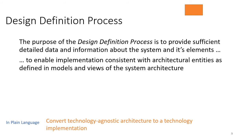The design definition process purpose is to provide sufficient detailed data and information about the system and its elements to enable implementation consistent with architectural entities as defined in models and views of the system architecture. In plain language, you take your technology-agnostic architecture that was previously defined and convert it to a technology implementation — think flow chart, circuit diagram, or mechanical diagram. We are really designing how this thing will be implemented.